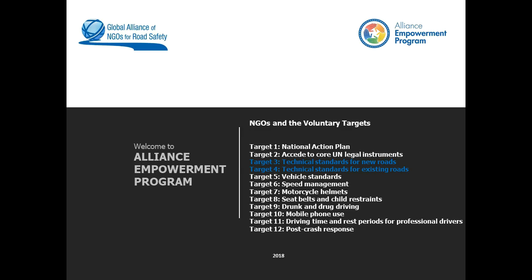Welcome to the Alliance series of webinars on the voluntary targets for road safety that the UN recently approved. In November 2017, United Nations member states reached consensus on 12 global performance targets that together work towards reducing road deaths and align with sustainable development goals 3.6 and 11.2. The second phase of our webinar series hones in on each of the targets and aims to show simple approaches that NGOs can take to help their governments implement each target in a meaningful and effective way.